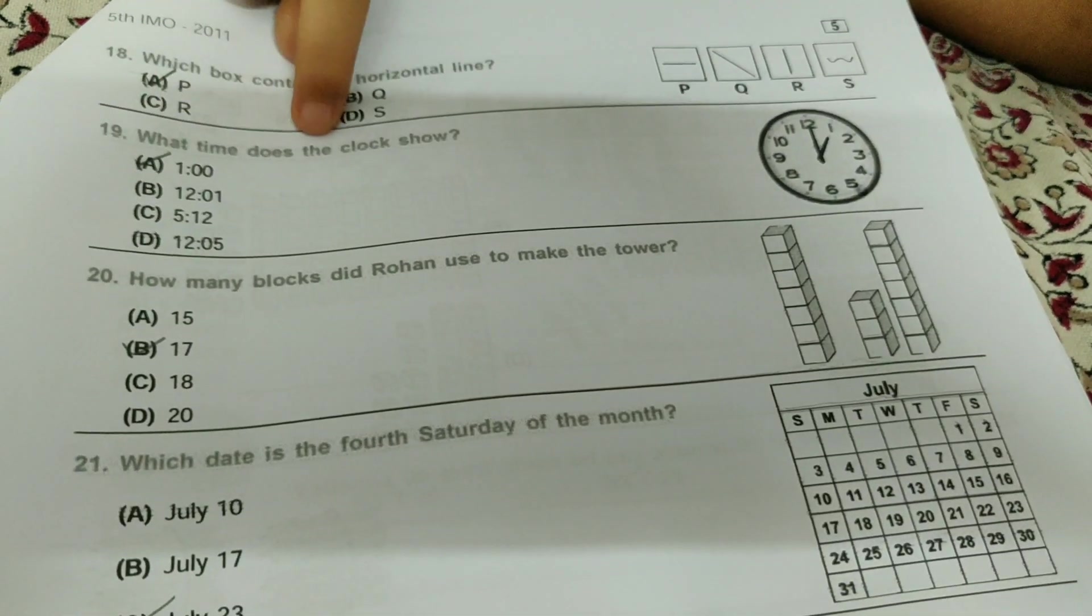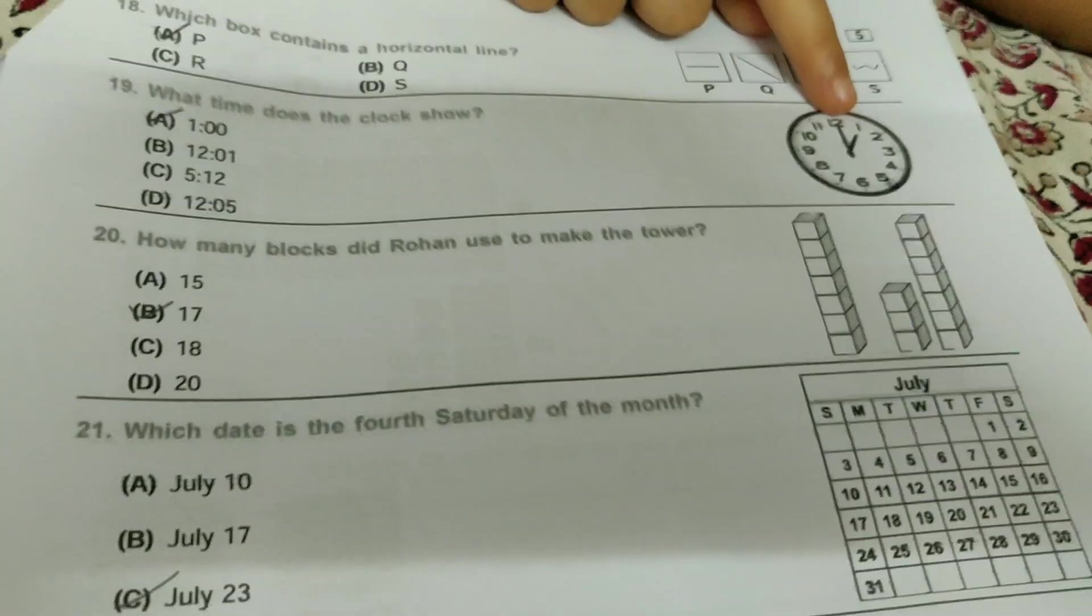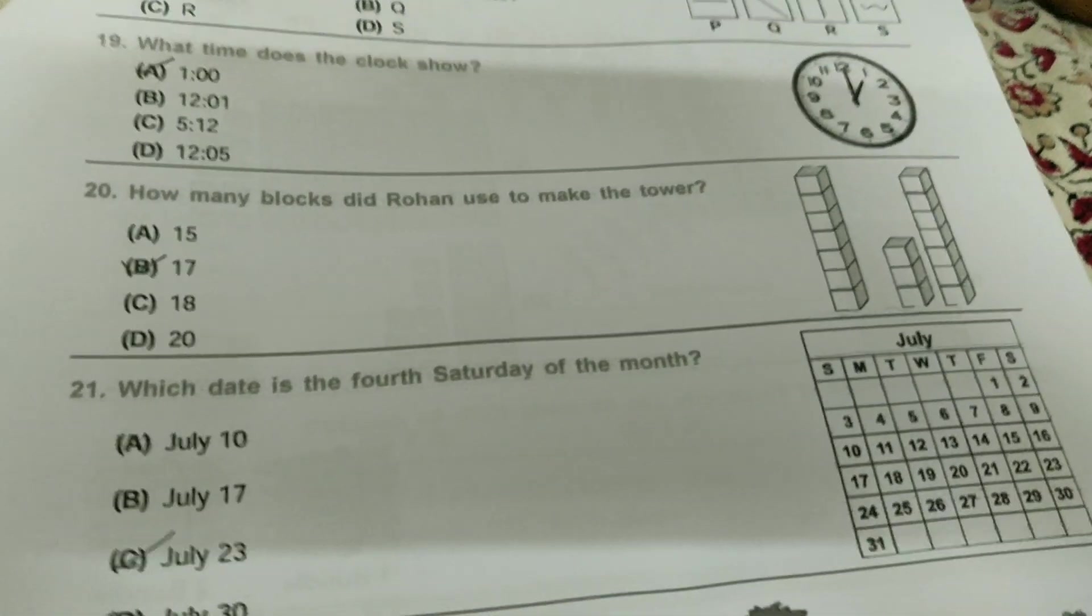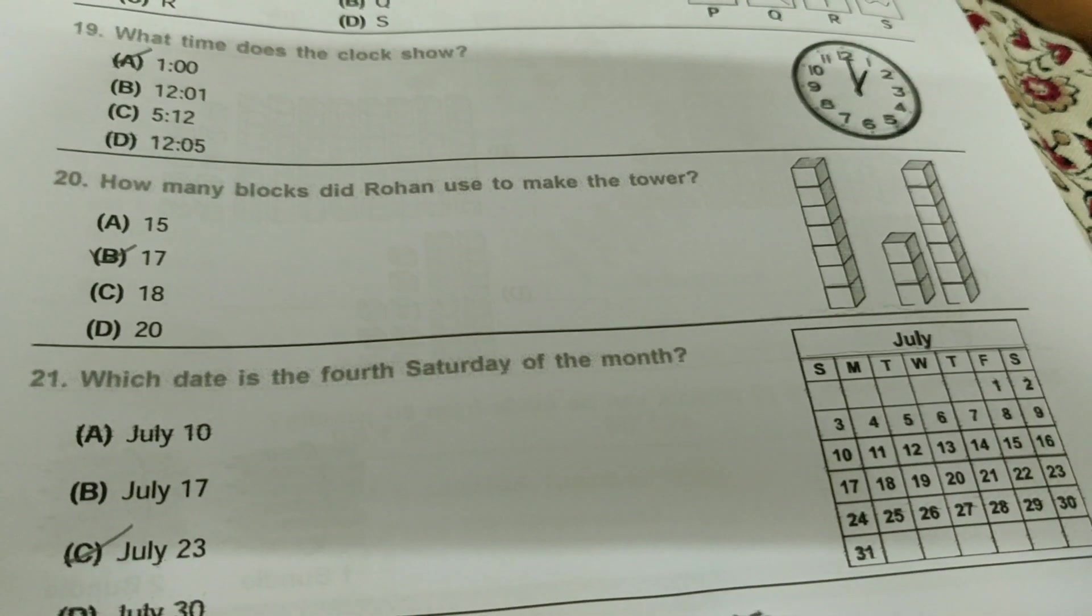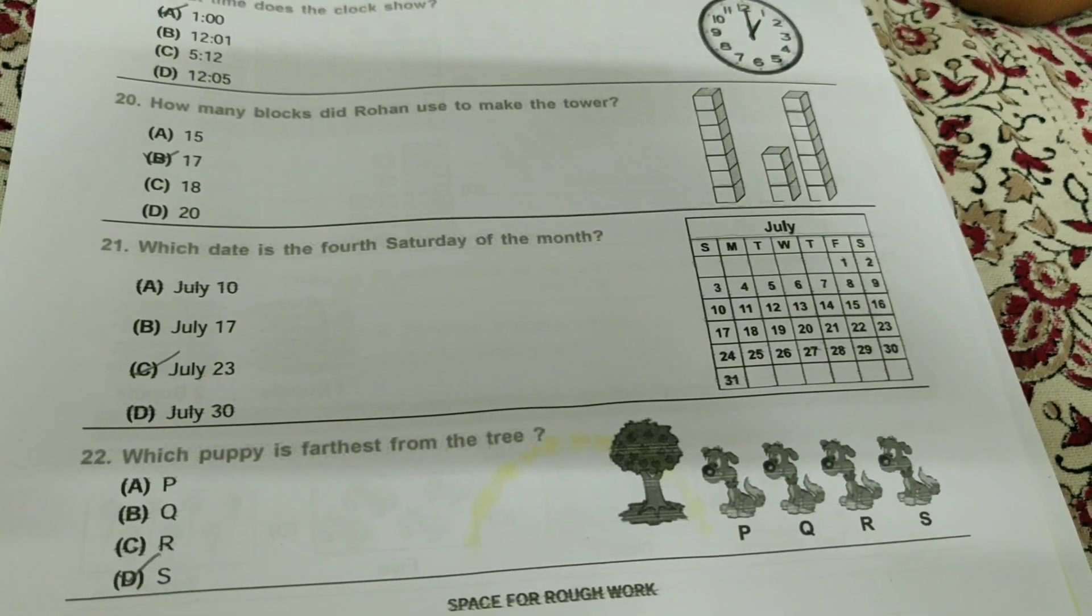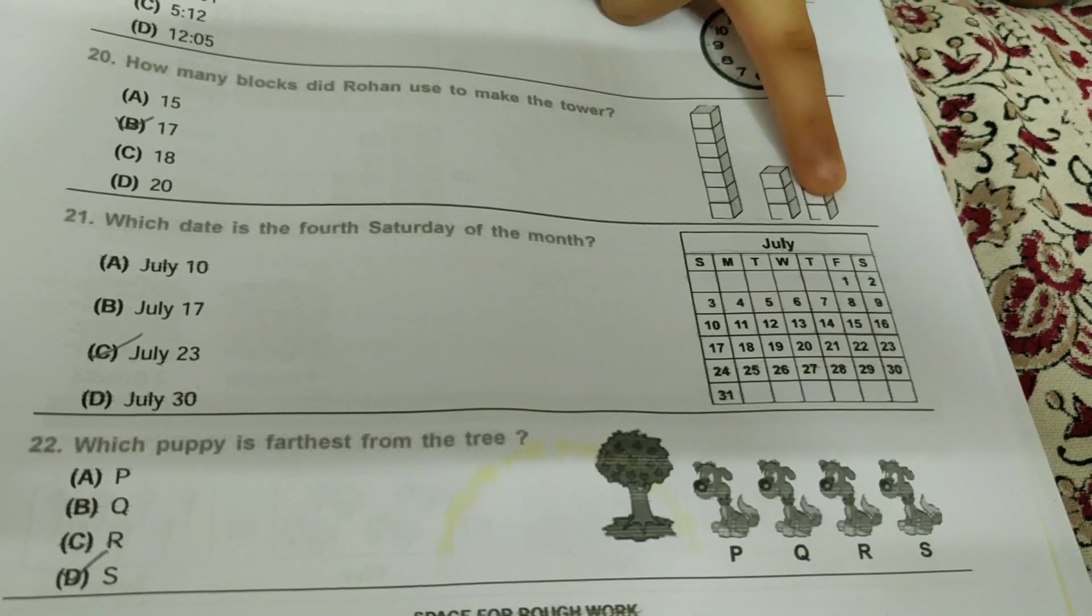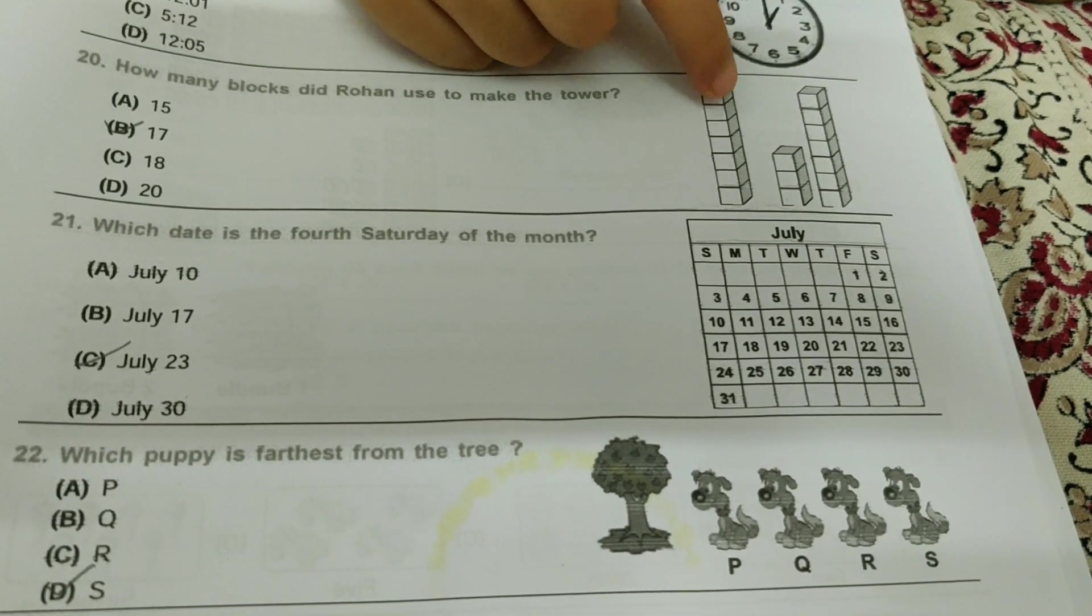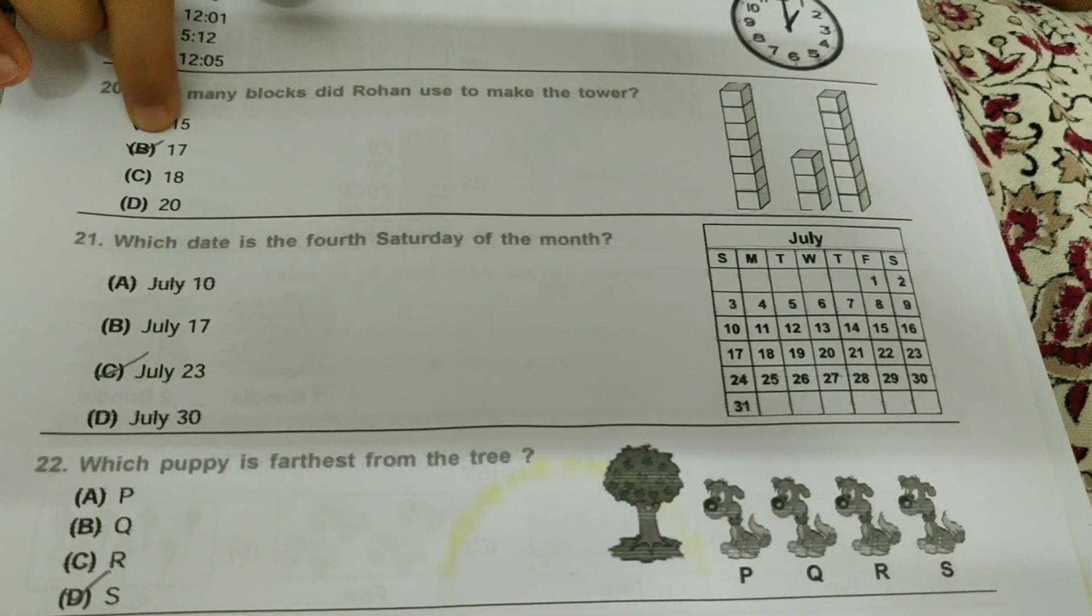What time does the clock show? It shows 1 o'clock. How many blocks did Rohan use to make the tower? So you can see these blocks, you need to count the total blocks, okay? 1, 2, 3, 4, 5, and there you go. And I got 17.